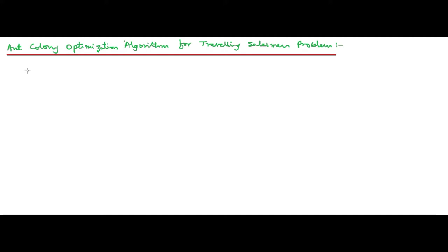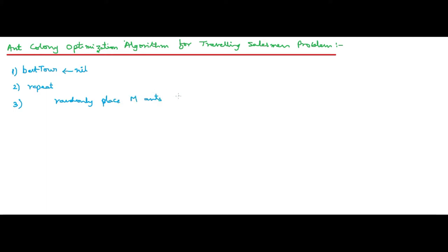Let us write the algorithm and slowly understand what are the various steps involved. The first step is: best_tour = nil. The second step is: repeat. The third step is: randomly place m ants on n cities.